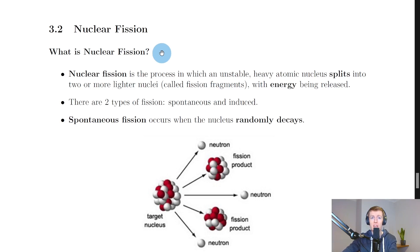So let's remind ourselves of what nuclear fission actually is. Nuclear fission is the process in which an unstable heavy atomic nucleus splits into two or more lighter nuclei called fission fragments, with energy being released. And notice how it's the splitting of a nucleus here, not the splitting of an atom, so don't say splitting of the atom in your exam.